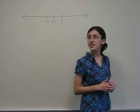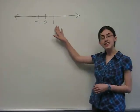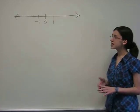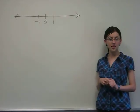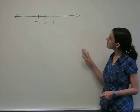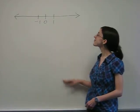For a unit elastic good, the elasticity is one. This means that the change in price is equal to the change in quantity demanded, and this good would be neither elastic nor inelastic.